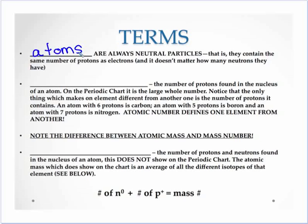Now, atoms are always neutral. We'll talk about what happens when we change each of these particles, but the atoms are neutral particles. And what that means for an atom: you're going to have the same number of protons as you have number of electrons.